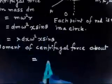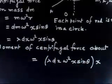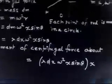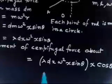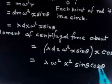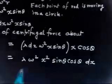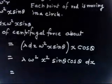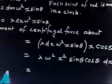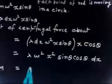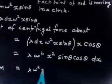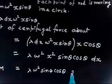The moment of centrifugal force about C is: force (lambda * dx * omega^2 * x * sin theta) multiplied by perpendicular distance (x cos theta). This gives lambda * omega^2 * x^2 * sin theta * cos theta * dx. So the small moment dM = lambda * omega^2 * sin theta * cos theta * x^2 * dx. To find the total moment, I have to integrate this expression.